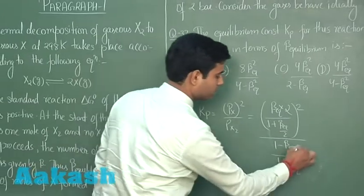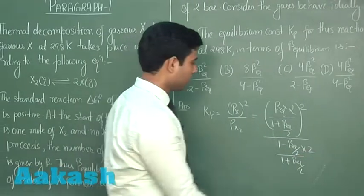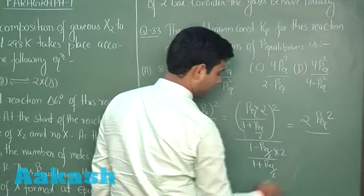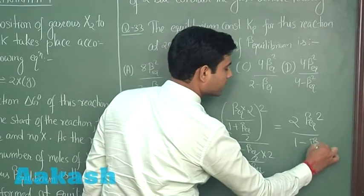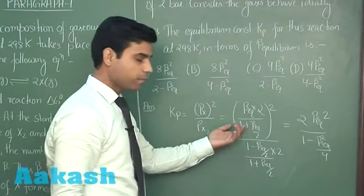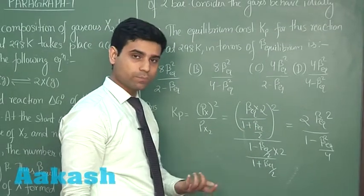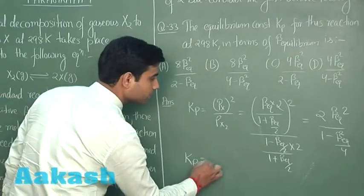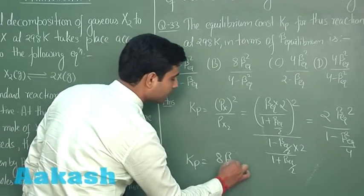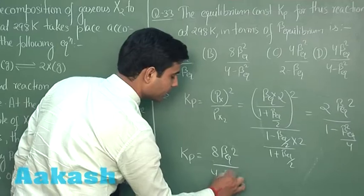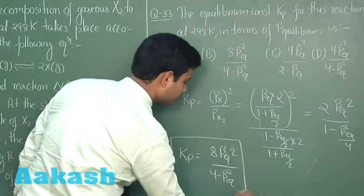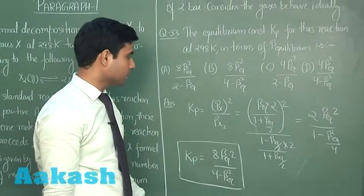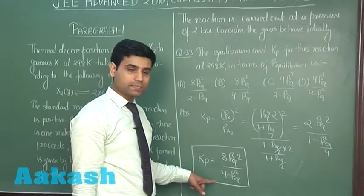Solving this equation and multiplying through by 2 gives 2 × beta_eq² divided by (1 − beta_eq²/4), since (1 + x)(1 − x) = 1 − x². Therefore Kp comes out to 8 × beta_eq² divided by (4 − beta_eq²). Checking the options, this matches option B: 8β_eq² / (4 − β_eq²).